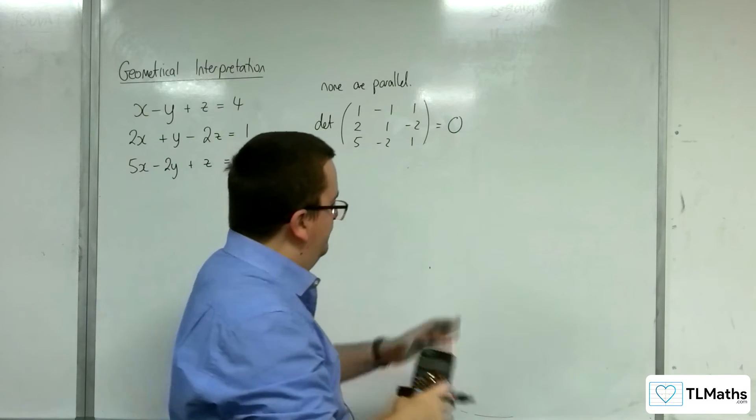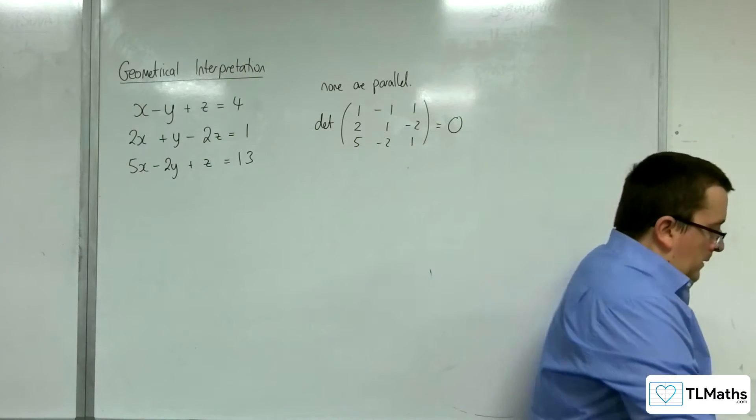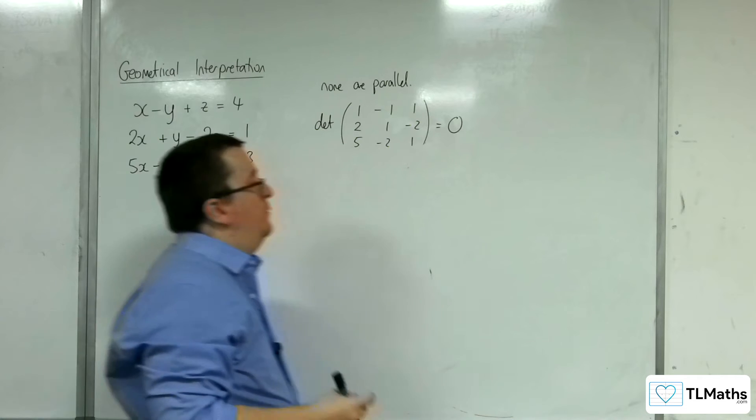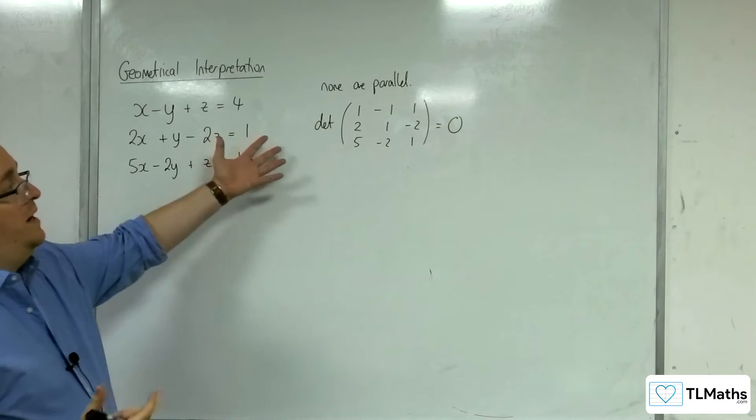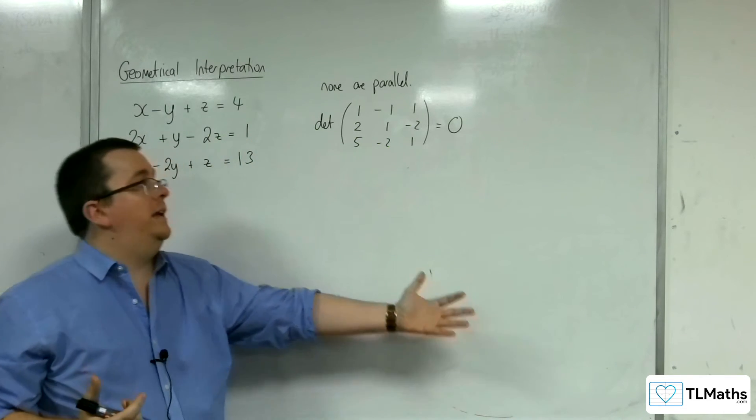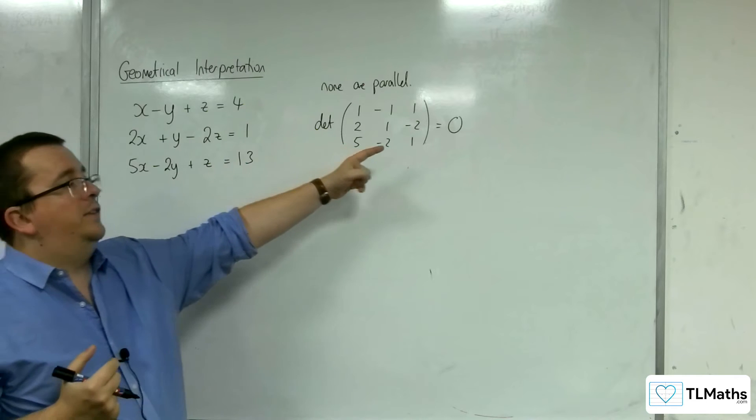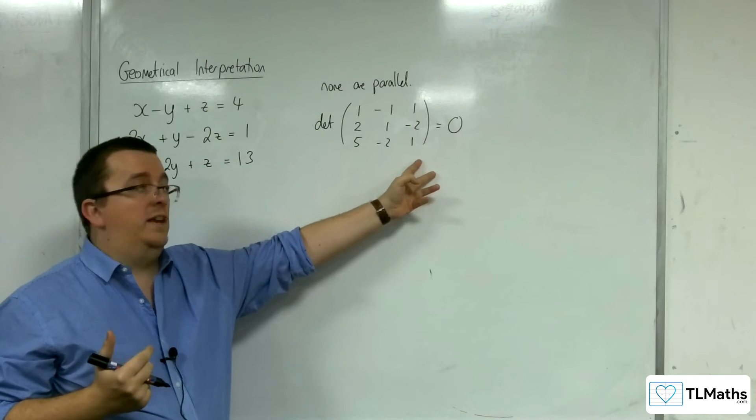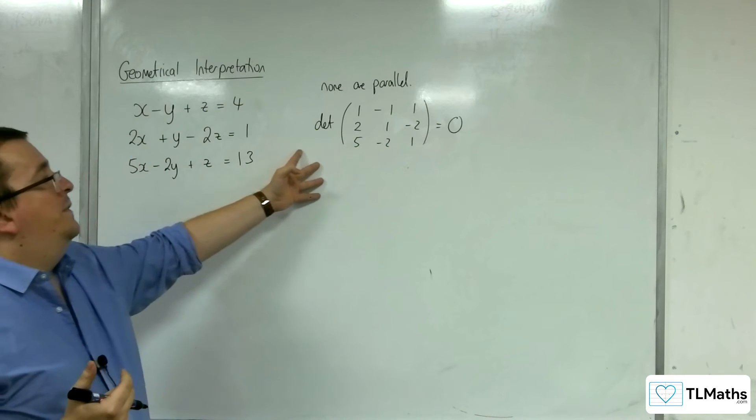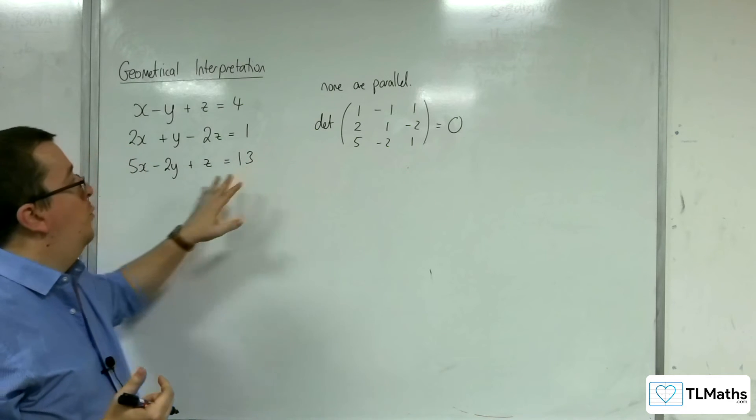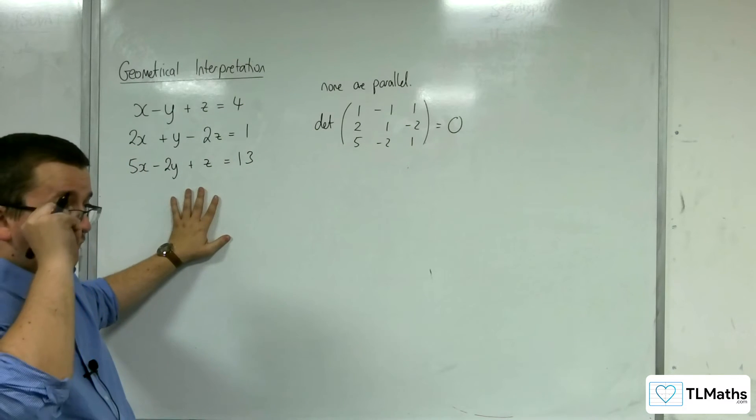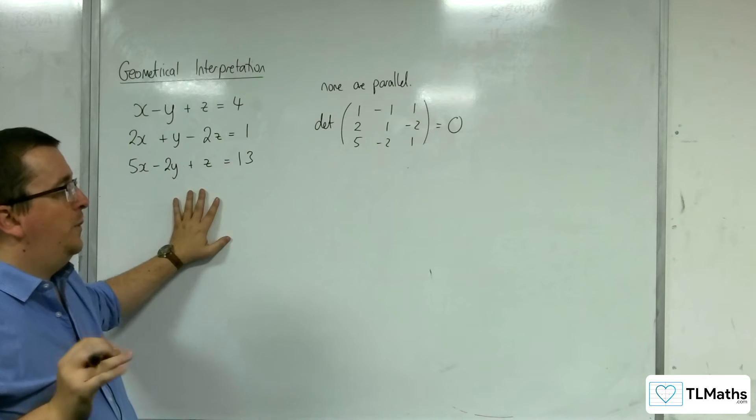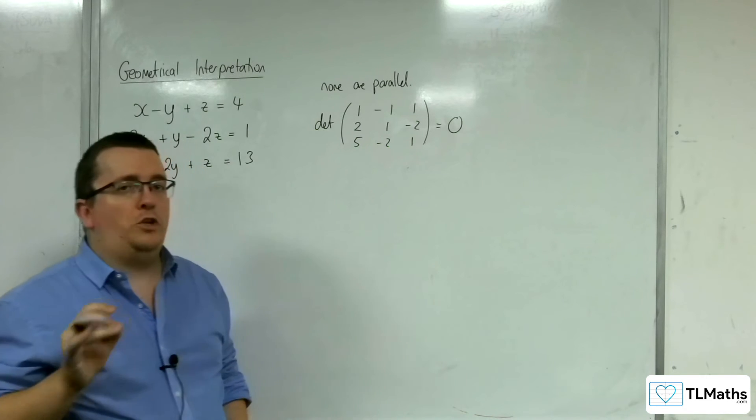So determinant of matrix A is 0. So that means because we've got none of parallel, that knocks out a few cases. We know that it's inconsistent. So it's a singular matrix. There is no inverse matrix. So there's no one solution. So it's now down to us to kind of figure out what situation this is now.